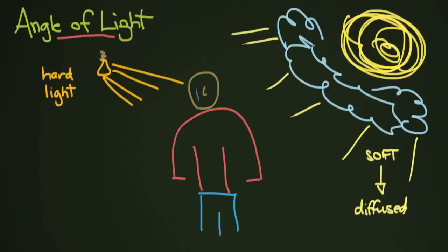You might have some soft shadows, like maybe on this side since the light is coming from his left. But in general, your light is going to be less shadowy — it's not going to be as hard. Now, another way of talking about light is its angle and its direction. More than just how hard that light source is, you need to consider where the light is coming from. So we're going to choose a different color here.